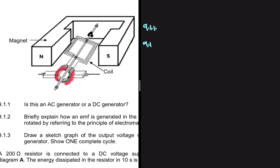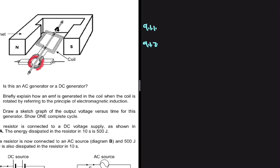Let's look at 9.1.2: briefly explain how an EMF is generated in the coil when the coil is rotated, by referring to the principle of electromagnetic induction. This is Faraday's law from grade 11. EMF is induced as a result of the change of magnetic flux with the coil. That is how EMF is generated when the coil is rotated.